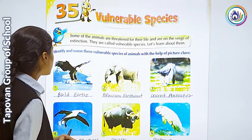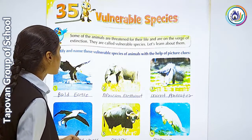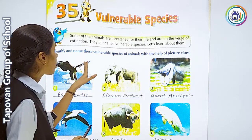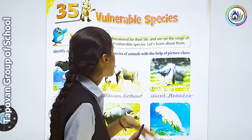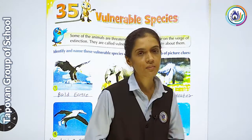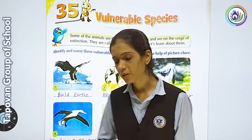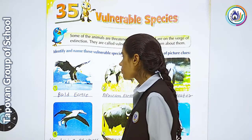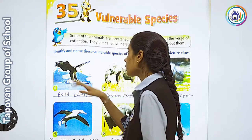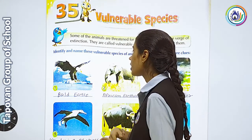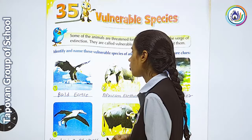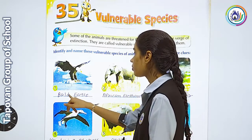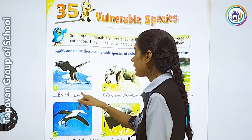Identify and name these vulnerable species. You have been given pictures — you need to identify the animals and write their names. Let us see the first picture. Look at what bird it is. What is its name?